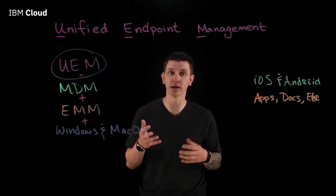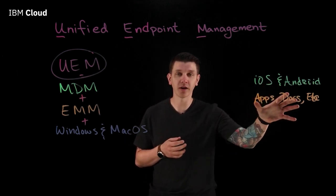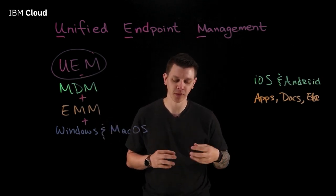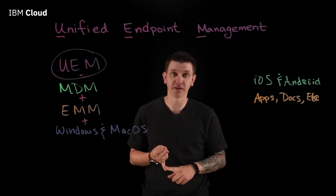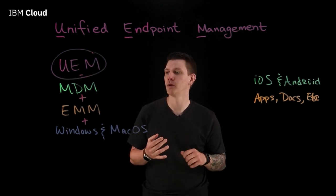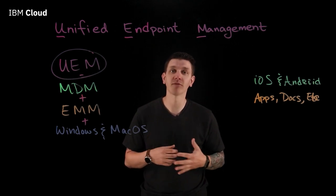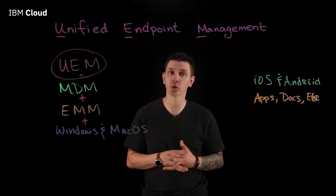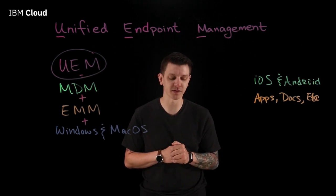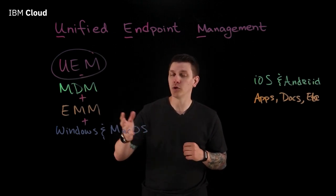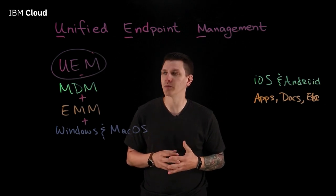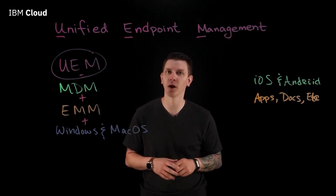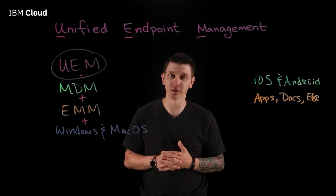On top of enrolling all the devices, you're going to get all the benefits of an EMM for iOS and Android and get to extend them into your Windows and macOS world. You're going to be able to start doing BYOD devices and corporate-owned devices as well. With those BYOD devices, you don't have to worry about personally identifiable information getting into your corporate side, or corporate information getting into the personal side of those devices. The UEM also offers automated enrollment programs so the device turns on, boots right up, and connects into the UEM — your end users don't have to do a lot of extra work.